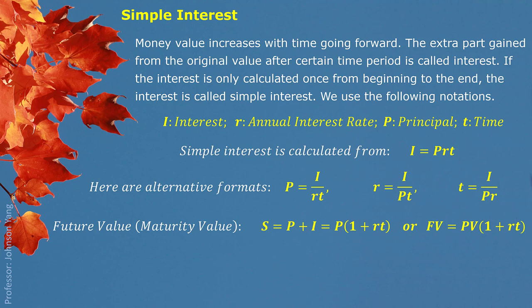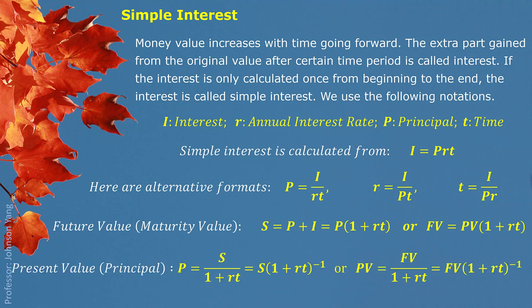If we switch them around, we can derive a formula for solving present value: P equals S divided by 1 plus RT. Alternatively, we can write it as S multiplied by (1 plus RT) to the negative 1 as exponent. Similarly, we can replace the symbols with PV and FV.